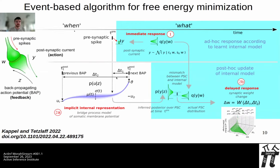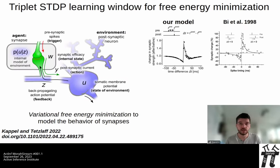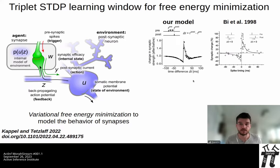Importantly, this internal model is only implicit — it's encoded into this spike-time-dependent plasticity rule. How do these rules compare to biology? The fit is quite nice given this is derived from first principles without making any assumptions. This is the measurement in biology — the Bi and Poo rule — from vitro studies where they injected pre- and post-synaptic spikes and measured the weight change in the synapse. Our model predicts very similar shapes.